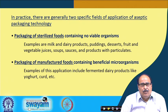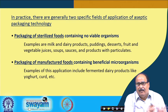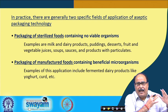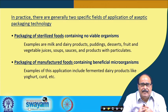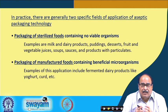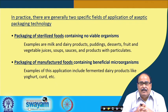In practice, there are generally two specific fields of application of aseptic packaging technologies. The first set of products are those where sterilized food is packaged — meaning the food inside the package does not contain any viable organism. Examples include milk, dairy products, puddings, desserts, fruits and vegetable juices, soups, sausage, and even products with particulates such as peas in brine solution. All these products are completely sterilized with no viable microorganism present.